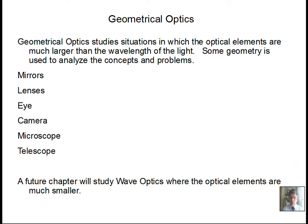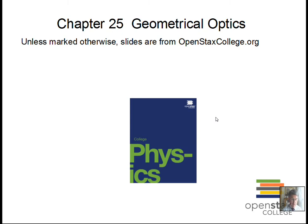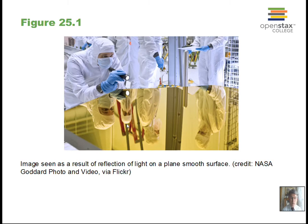Professor Clements here, considering more optics material, teaching out of the OpenStax College Physics textbook. We have a set of slides here. This material relates to chapter 25 in OpenStax College Physics — geometric optics — talking about rays of light, how light reflects, how it refracts, and a little bit on total internal reflection.